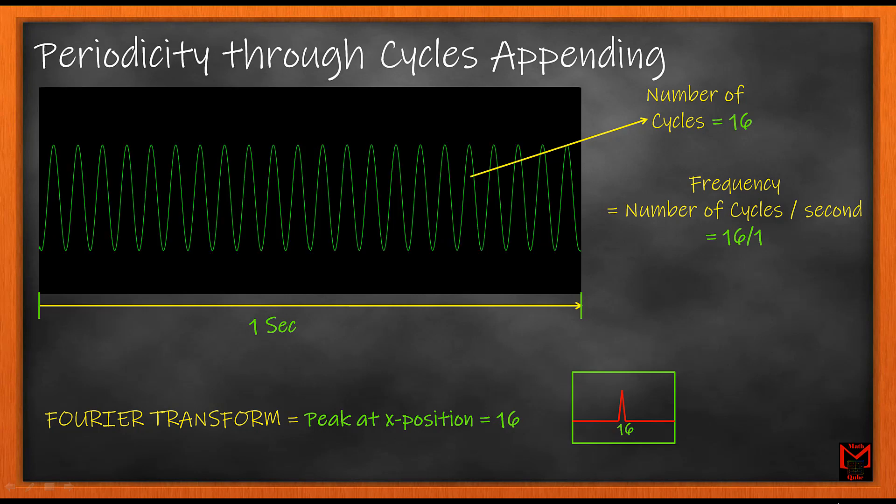Now we can extend the periodicity of any signal through adding cycles. What we do here is include more cycles in equal time. As shown in this figure, the Fourier transform will carry 16 cycles in the same 1 second duration.